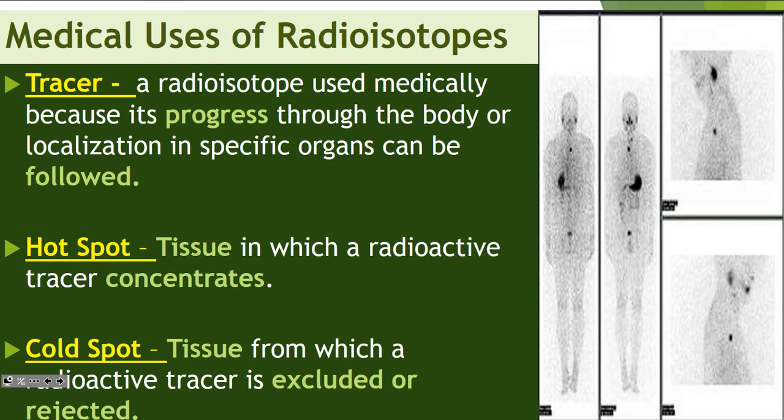Medical uses of radioisotopes: first, we have tracers. Tracers are a radioisotope used medically because it progresses through the body or localizes to specific organs, and sort of pools in that specific organ, or we can follow it through. Hot spots are tissues where radioactive tracers concentrate. Cold spots are tissues where they don't concentrate. They use both of those to see which ones are good and bad as far as cancer and things like that.